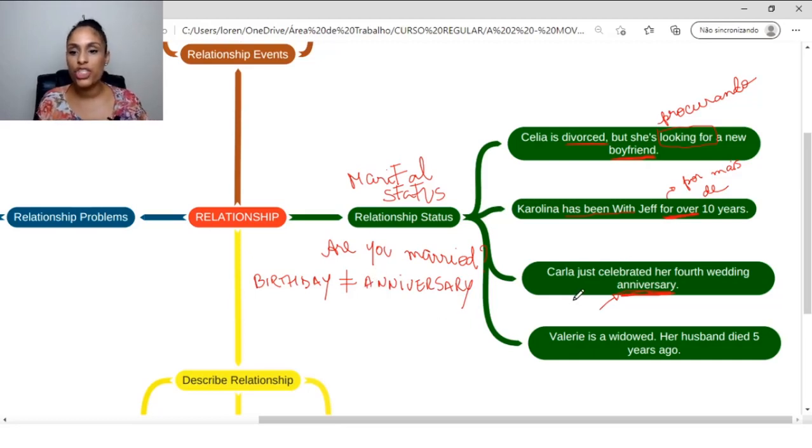In Carla's case, just celebrated. So when we use this just, she just celebrated, she just did her fourth wedding anniversary. So the fourth, TH at the end, fourth anniversary. So the fourth, just celebrated, this idea of celebrating, commemorating, the fourth wedding anniversary of her marriage. Valery is a widow. She is a widow. Widow. Her husband died five years ago. Her husband died five years ago. So this ago gives this idea of ago.